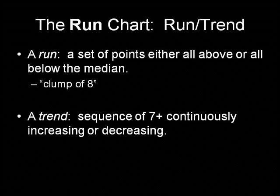A run is a set of points either all above or all below the median. A trend is a sequence of seven or more continuously increasing or decreasing data points. When speaking about common and special causes, a run chart becomes important because a run of eight or more is often a special cause.